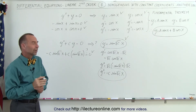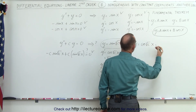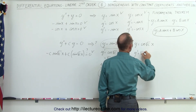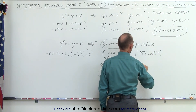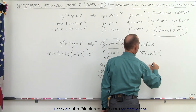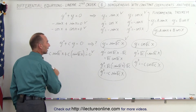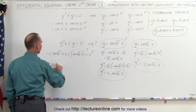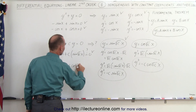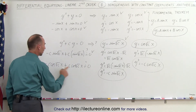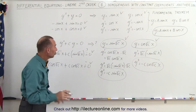Since sine of square root of c times x works, y equals cosine of square root of c times x should also work. Taking the first derivative gives y prime equals square root of c times negative sine of square root of c times x. The second derivative gives y double prime equals minus c times cosine of square root of c times x. Plugging in, we get minus c·cosine plus c·cosine, which equals zero — confirming this is also a solution.